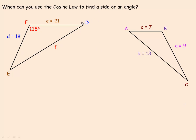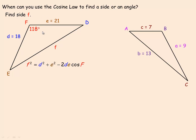Let's turn to the cosine law. If we're asked to find side F, the cosine law is written with F-squared alone on one side. In order to use the cosine law to find a side, you need to know the other two sides — D and E — and the angle opposite the side you're finding. So to find a side using the cosine law, you need the other two sides and the angle between them.